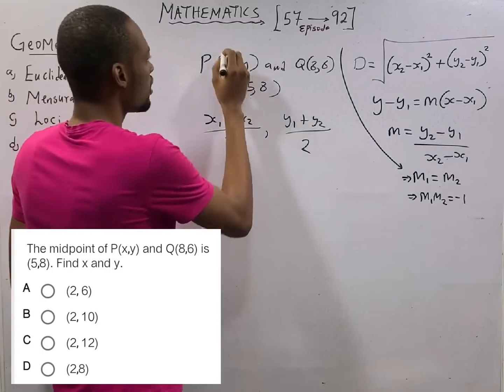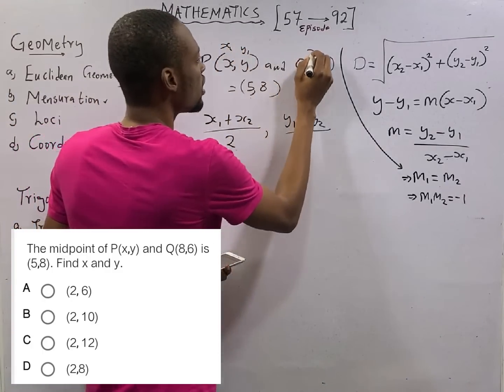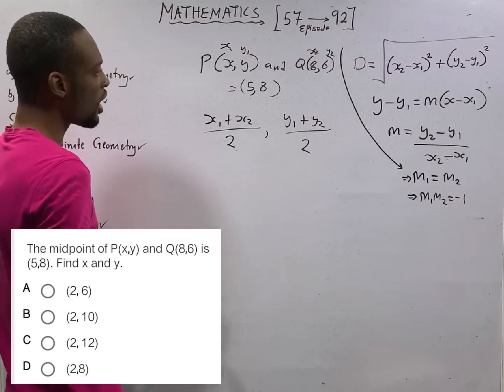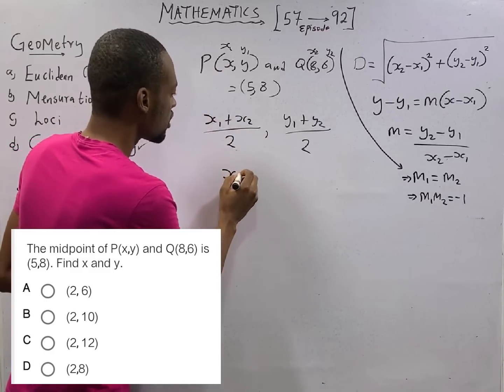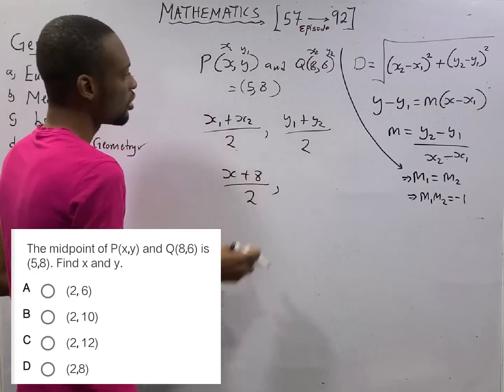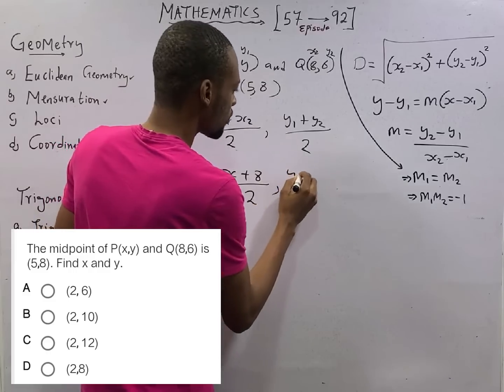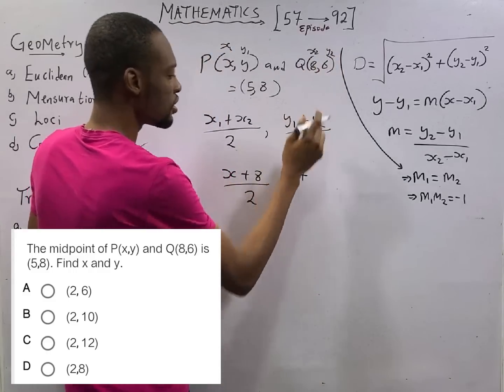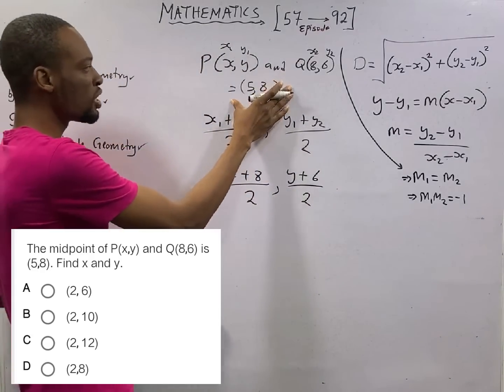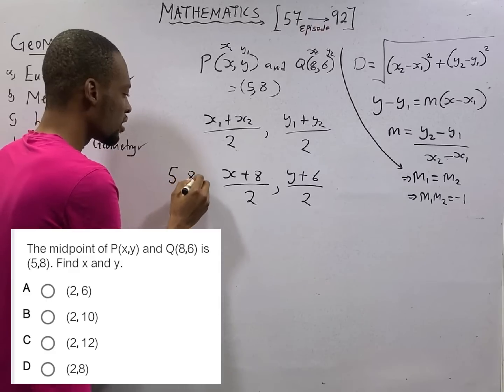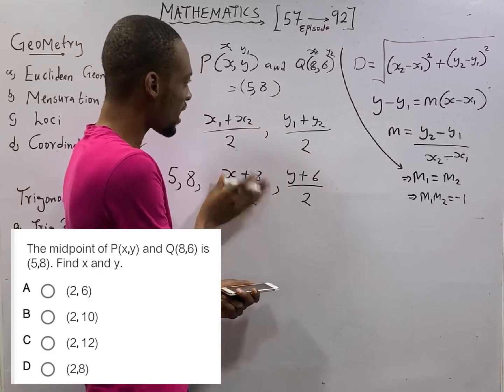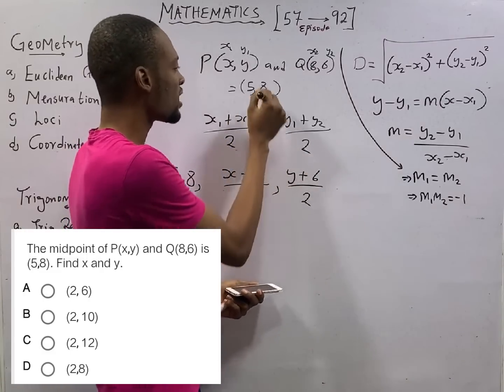In this case, here is x₁, here is y₁, here is x₂, here is y₂. Which makes us have x₁ is x, x plus x₂ is 8, plus 8 over 2, comma y₁ is y, y plus y₂ is 6, plus 6 over 2. So, we are already given the midpoint to be 5 comma 8. What this implies is that for the x part it equals 5 and for the y part it equals 8.